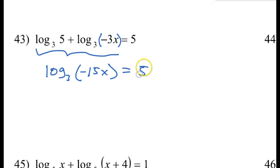So now I'm going to rewrite this in exponent form, starting with the base which is 3. Then the rest of the problem is going to switch sides, so the 5 is going to come over to the left and make 3 to the fifth power, and then the negative 15x is going to go over to the right.